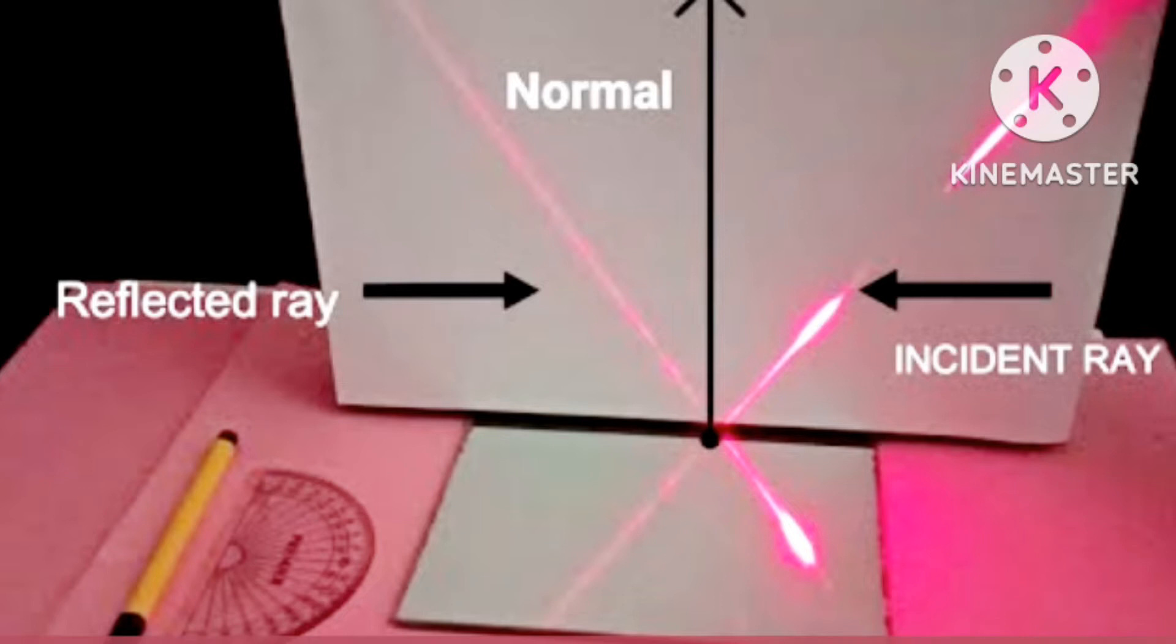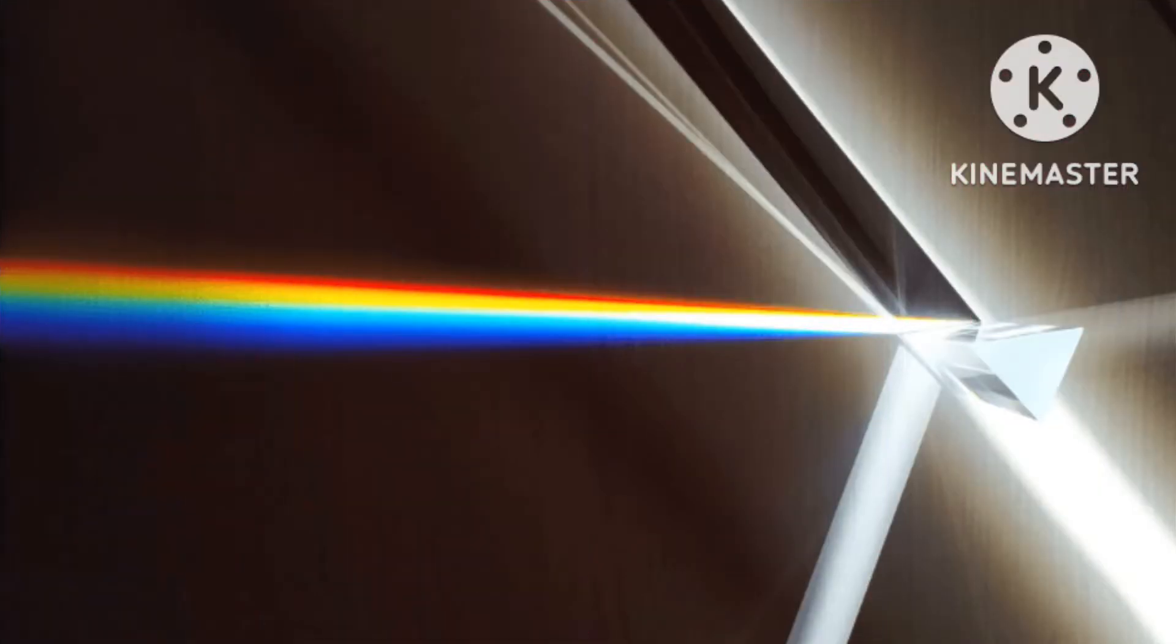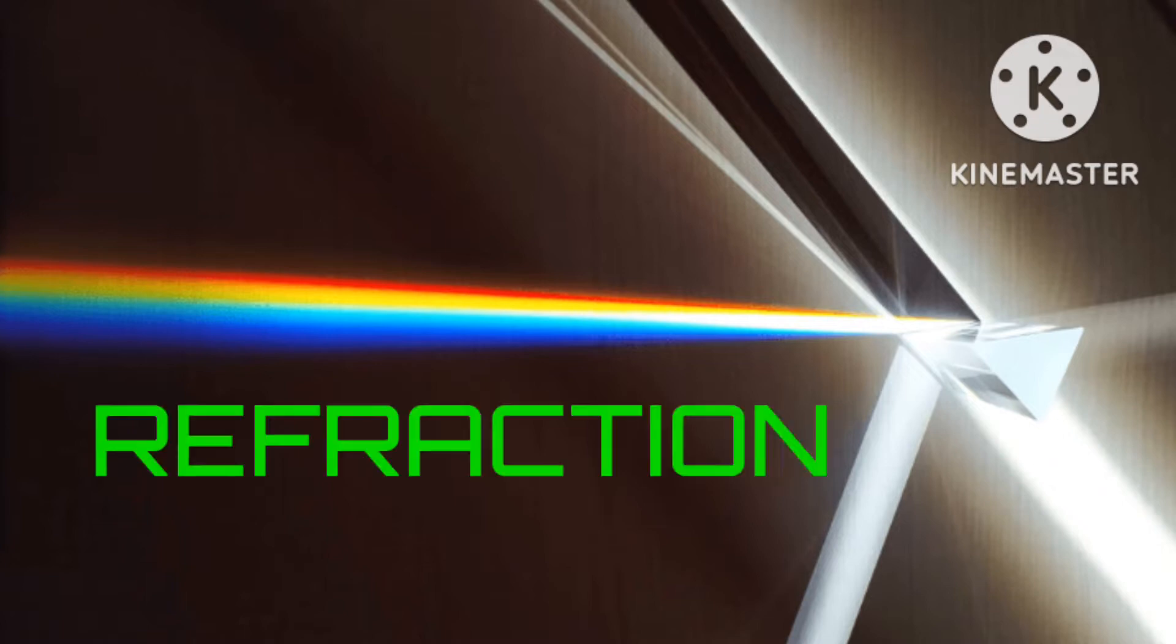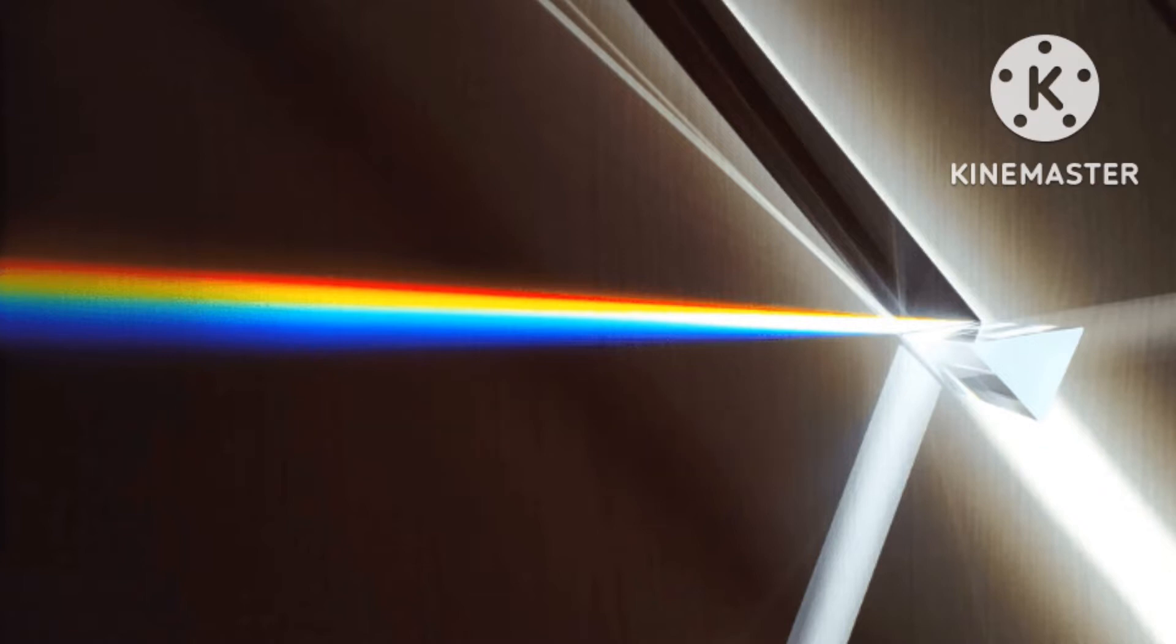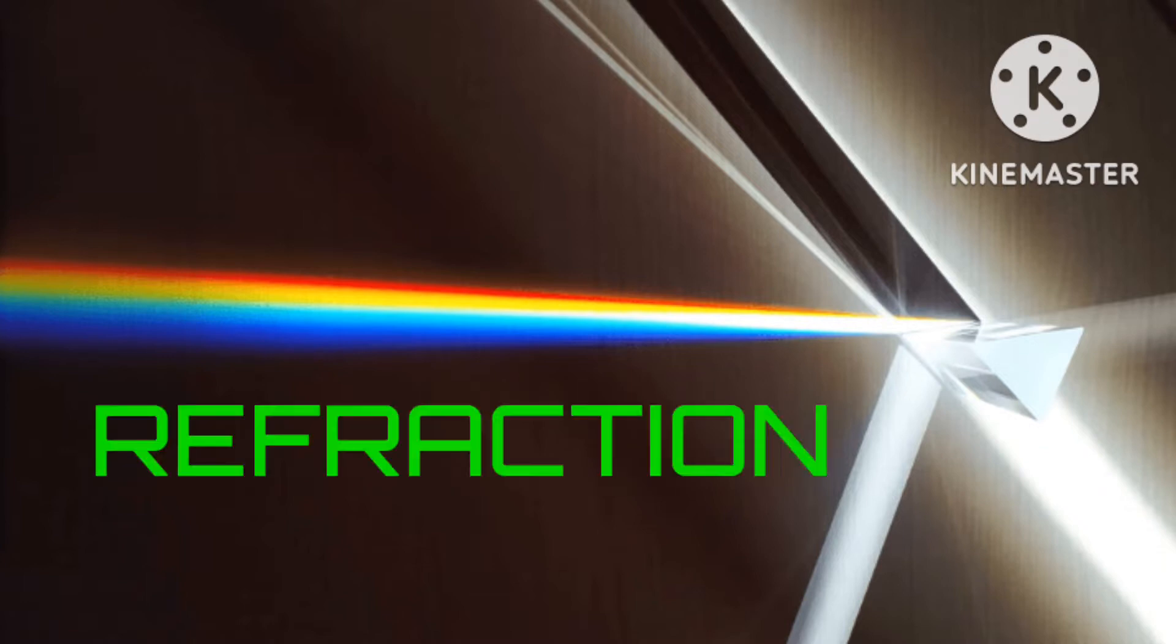You can check it out in my channel or you can observe from my suggested video. Refraction is another interesting characteristic of light rays. When light rays travel from one optical medium to another, they appear to bend at the surface of separation of the two mediums. This change of direction of light rays is called refraction.